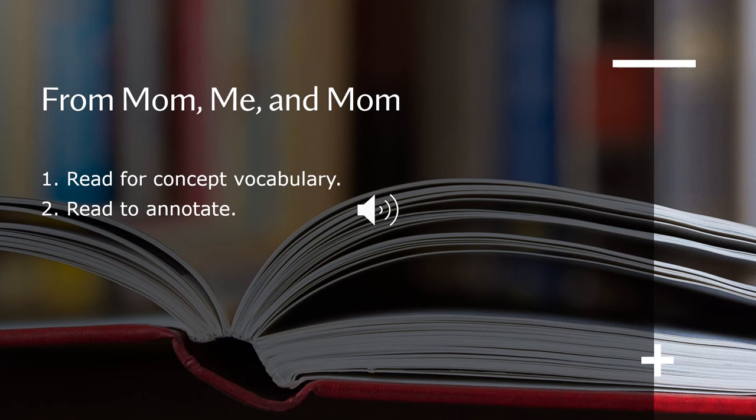That's why we are going to start our week with a text called From Mom, Me and Mom. We are going to read for concept vocabulary and we are going to read for annotation. Our word wall is going to be supervision, charitable, philanthropist, and annotation. We are going to have a video about that vocabulary and we are going to implement and apply on interactive activity 1.